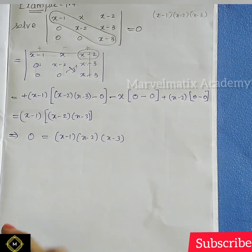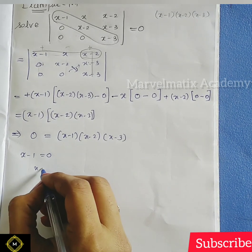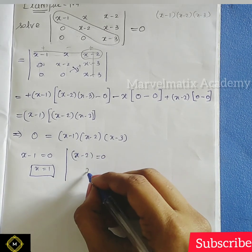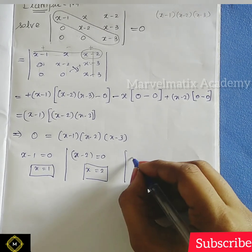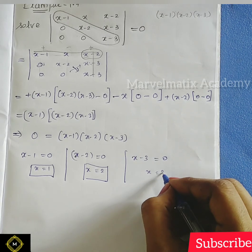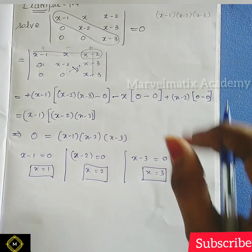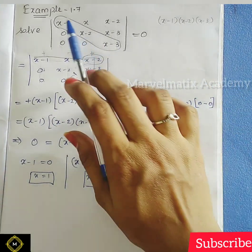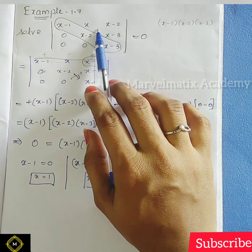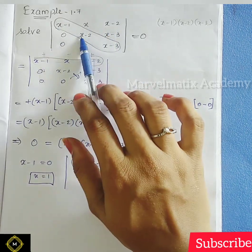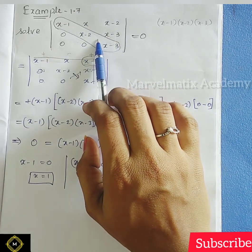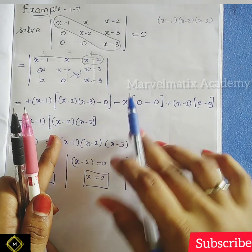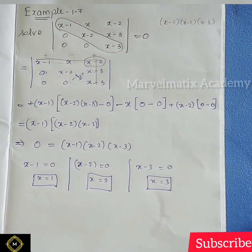So 0 equals x minus 1 into x minus 2 into x minus 3. Now we go to each factor: x minus 1 equals 0 gives x equals 1; x minus 2 equals 0 gives x equals 2; x minus 3 equals 0 gives x equals 3. The shortcut: multiply the main diagonal — x-1, x-2, x-3 — which equals 0. That's the time-saving method. This is Example 1.7.